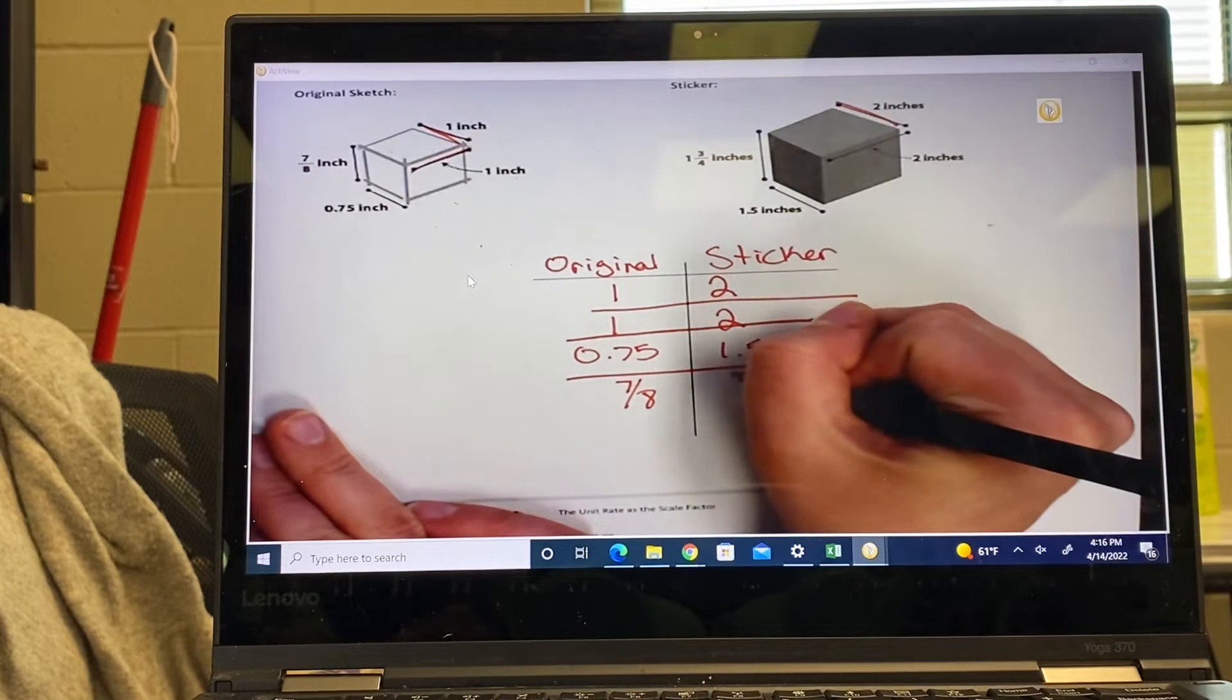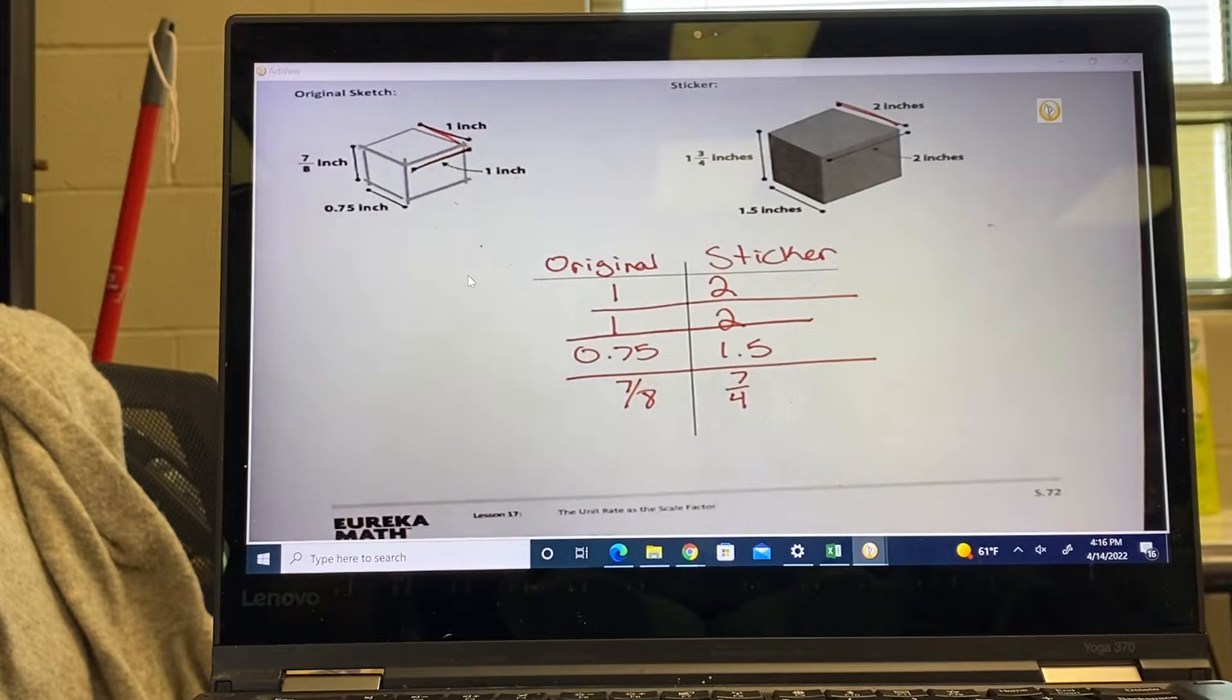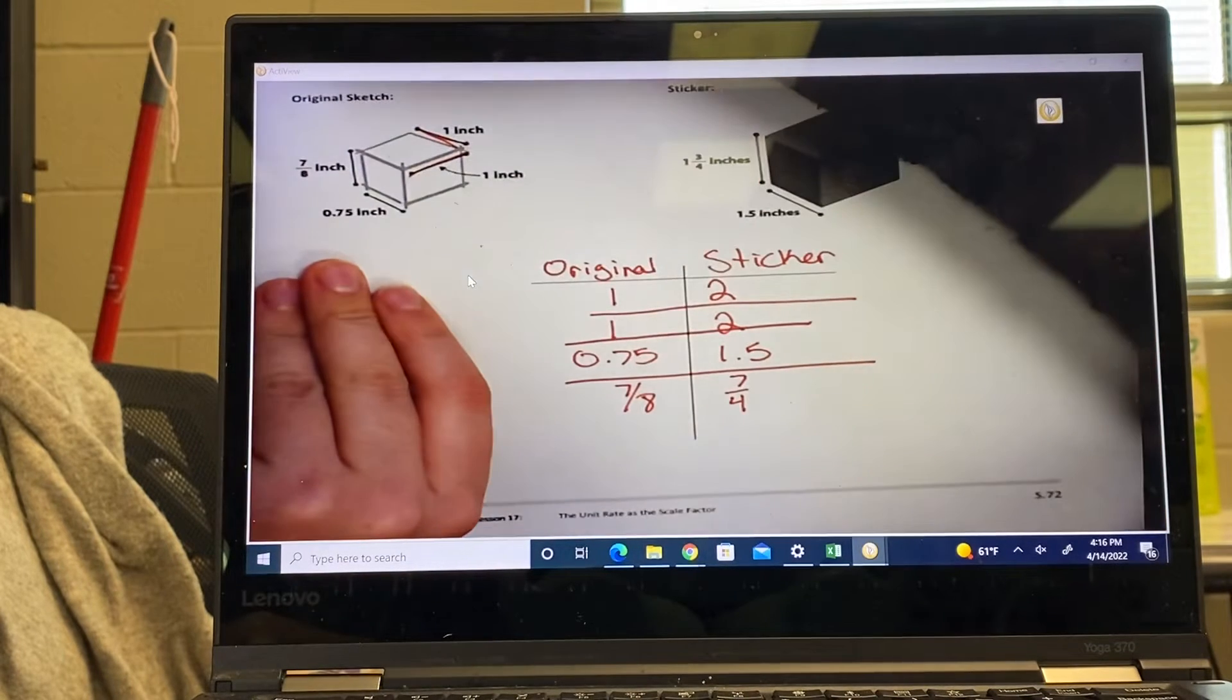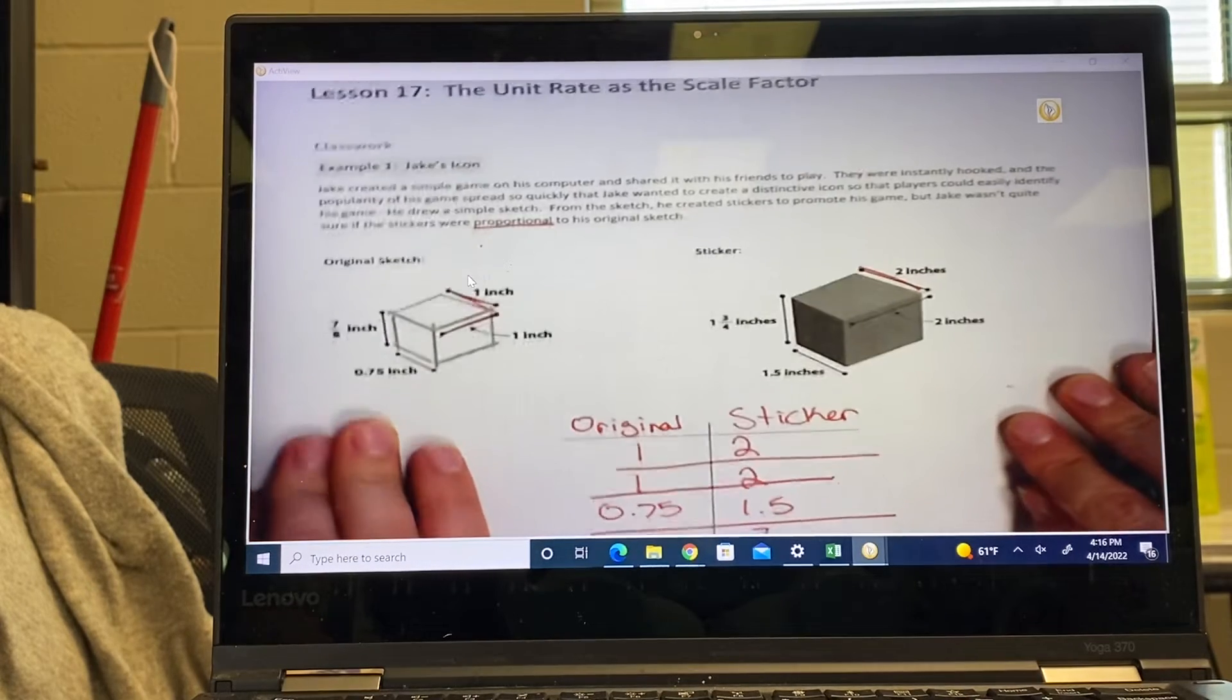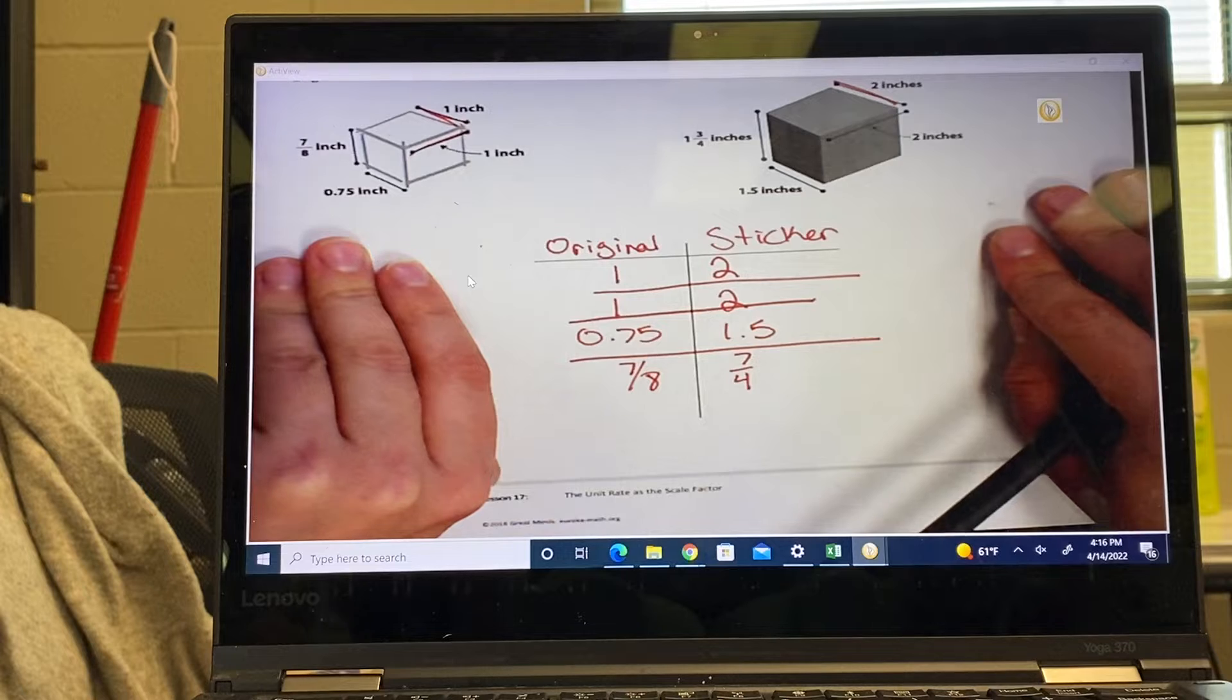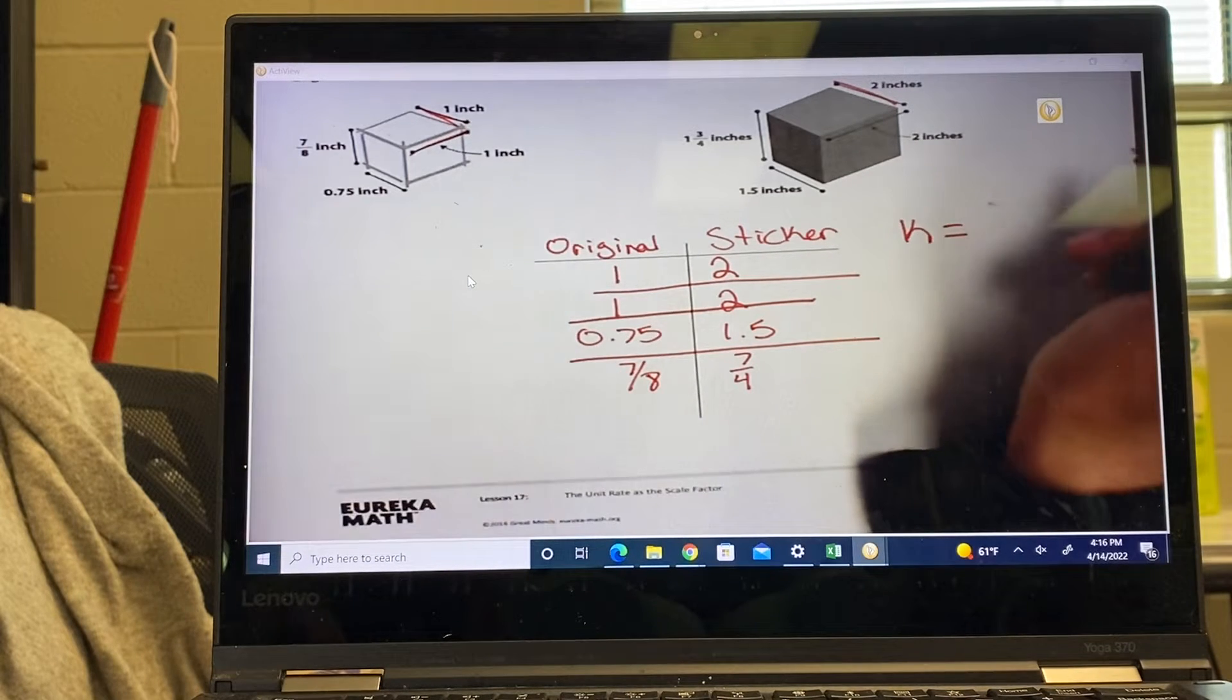So after we line them up, we're looking for something that we talked about in the last video which is called the constant. We're looking to make sure they're proportional, and in order to do that we have to find our constant.